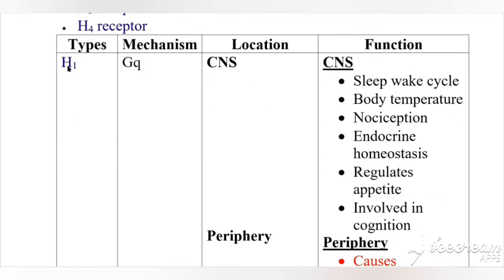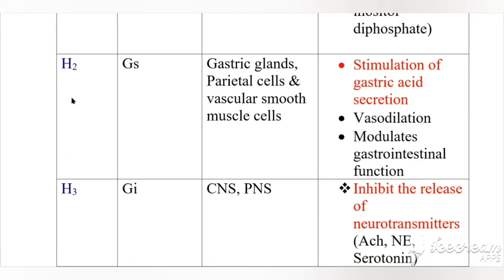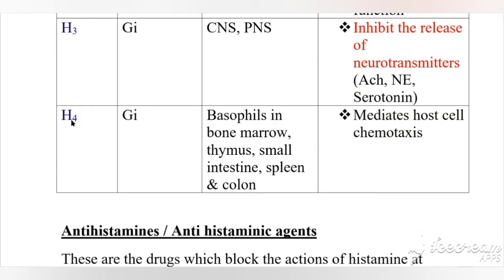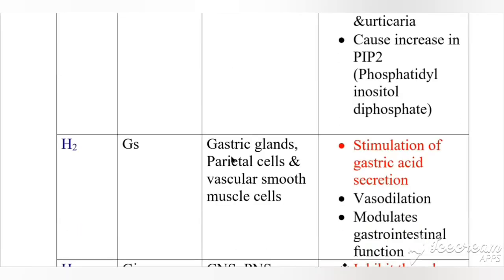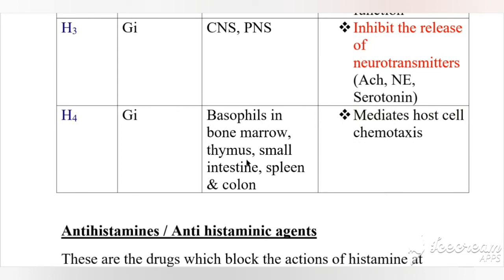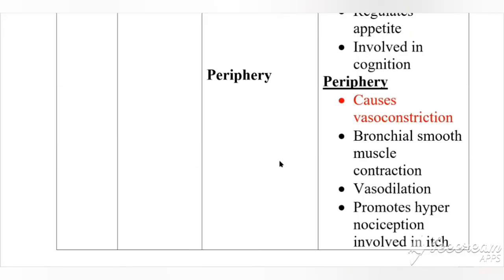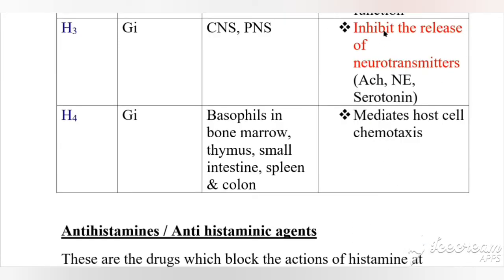To summarize all four receptors: H1 is coupled with Gq, present in CNS and periphery, main role is vasoconstriction. H2 is coupled with Gs, present in gastric glands, parietal cells, and vascular smooth muscle cells, main role is stimulating gastric acid secretion. H3 is coupled with Gi, present in CNS and PNS, enables release of neurotransmitters. H4 is coupled with Gi, present in basophils, bone marrow, thymus, small intestine, spleen, and colon, mediates host cell chemotaxis.